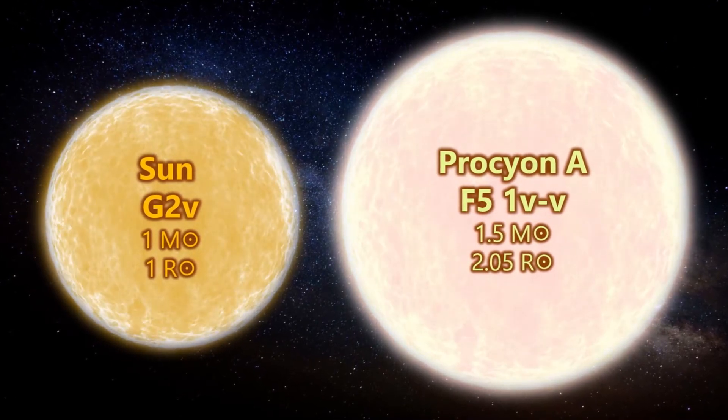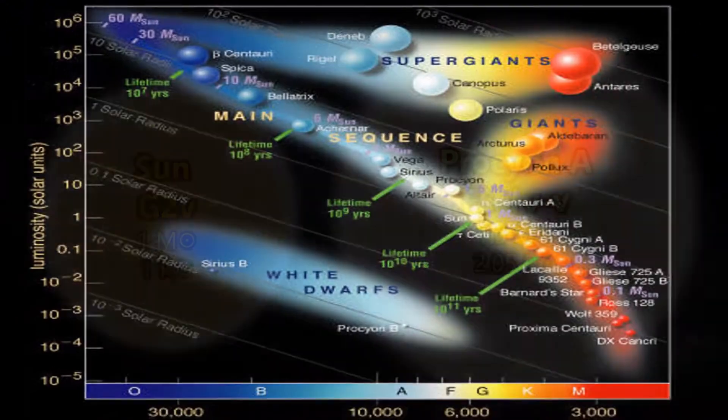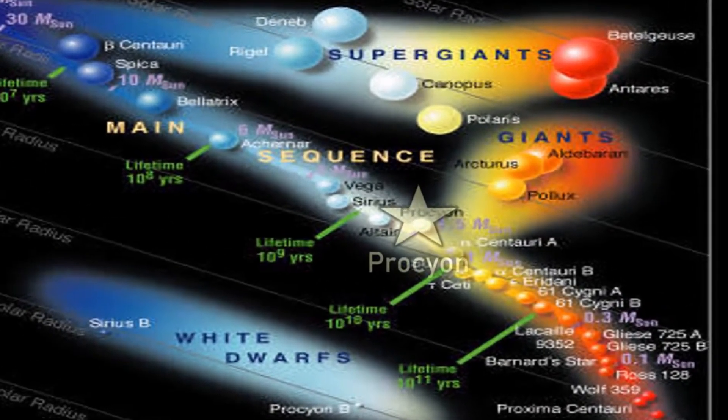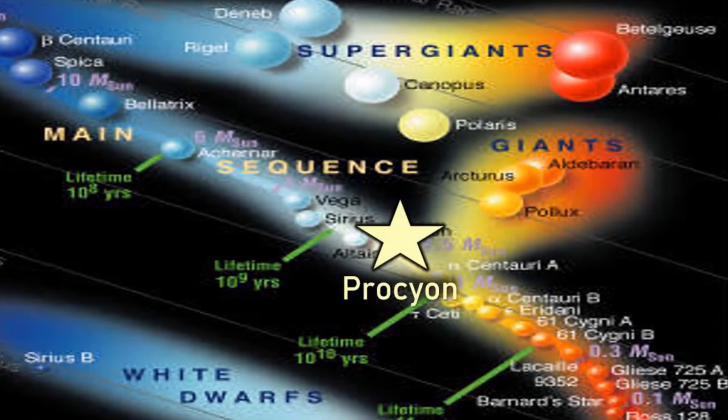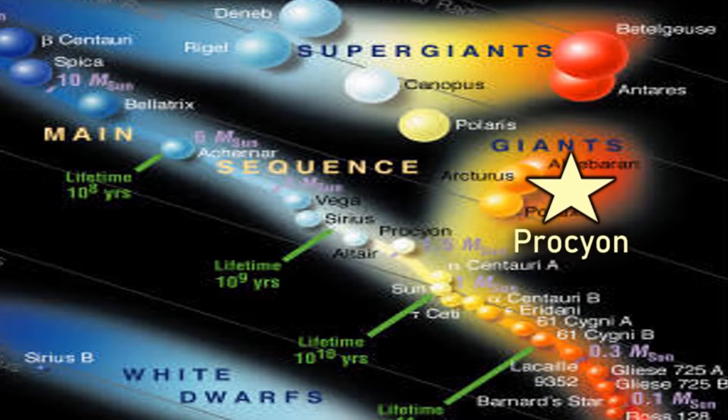The difference however is that Procyon A is at a late stage in its time on the main sequence. Very bright for its spectral class, this suggests that it is evolving into a sub-giant that has nearly fused all its hydrogen core into helium, after which it will expand as the nuclear reactions move outside the core.